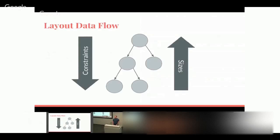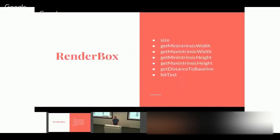In practice most people use RenderBox, a specialization of RenderObject that uses Cartesian coordinates. RenderBox has a size (width and height). Box constraints are the key: in the width dimension there's a min and a max, and in the height dimension there's a min and a max. The rule is that if the parent gives you these constraints, you must be within that allowed region — not too small and not too big.